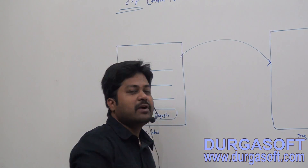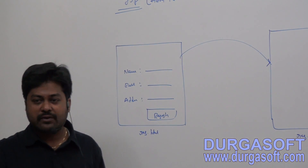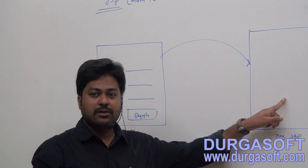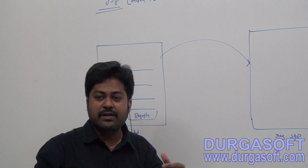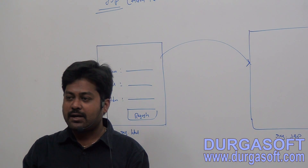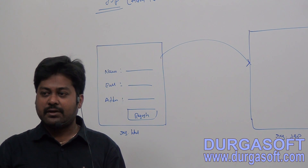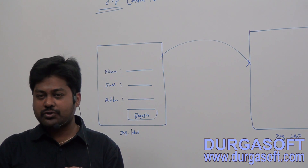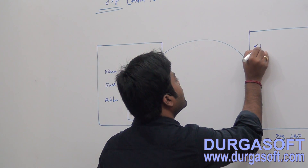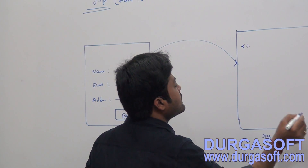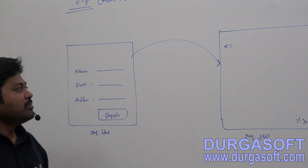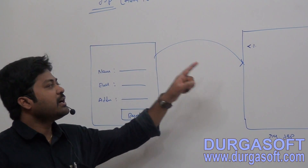To read form data we require a request object. The read operations — where do we write them? If it is a servlet, inside the servlet we write them under service, doGet, or doPost methods. So here in JSP, if you want to read data, you have to use a scriptlet. Inside the scriptlet you write your read logic.